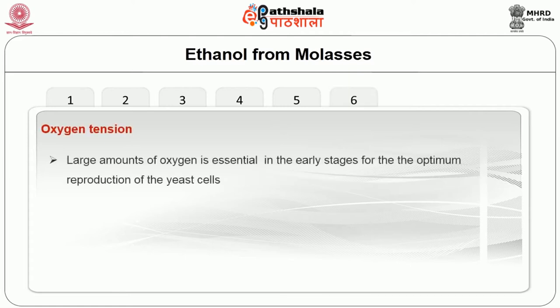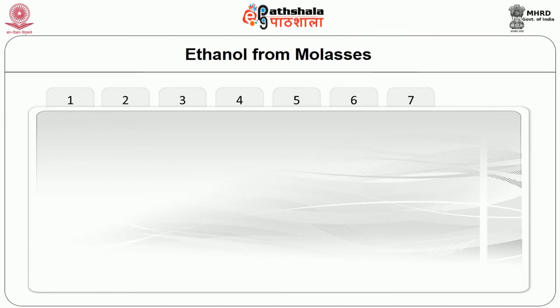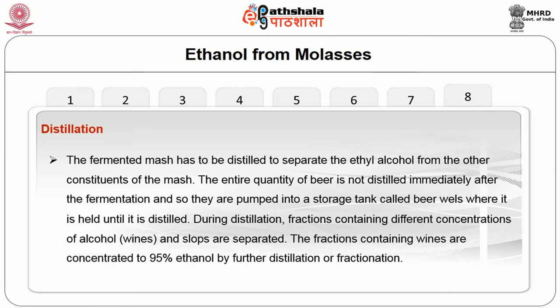The sixth factor is oxygen tension: large amounts of oxygen are essential in the early stages for the optimum reproduction of yeast cells. Temperature is also very important, where the mash is usually pitched at a temperature of 60 to 80 degrees centigrade. Distillation is another important step where the fermented mash has to be distilled to separate the ethyl alcohol from the other constituents. The entire quantity of beer is not distilled immediately after fermentation, so it is pumped into storage tanks called beer wells. During distillation, fractions containing different concentrations of alcohol called heads and tails are separated, and the fractions containing wines are concentrated to 95% ethanol by further distillation or fractionation.